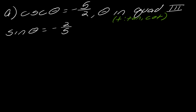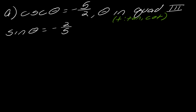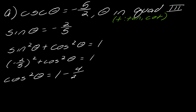I want to use identities that don't have more than two trig functions in them. I think it's best to use a Pythagorean identity. I'll go with sine squared theta plus cosine squared theta equals 1. Plugging in sine of theta as negative 2 over 5 squared plus cosine squared theta equals 1, I get that cosine squared theta equals 1 minus 4 over 25, which is 21 over 25.